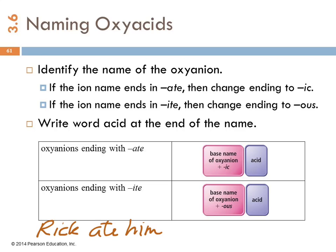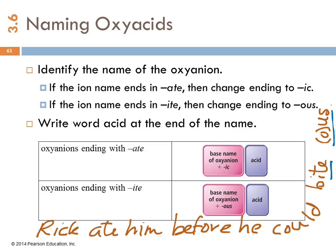My sentence is Rick ate him before he could bite us. So if it ends in -ate, you change it to -ic. If it ends in -ite, you change it to -ous. Let's do a couple examples.